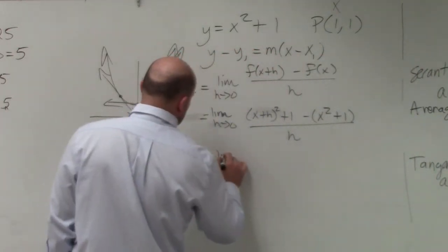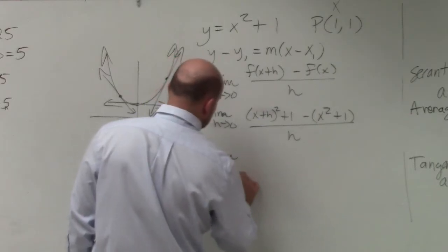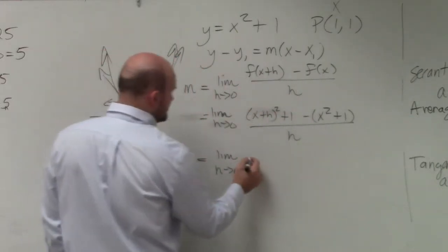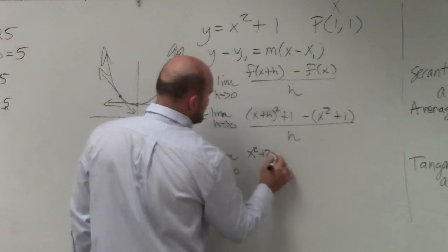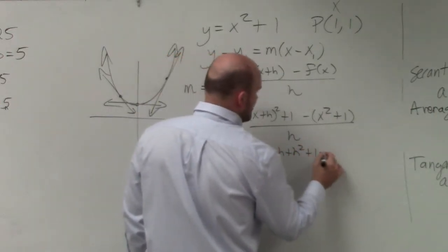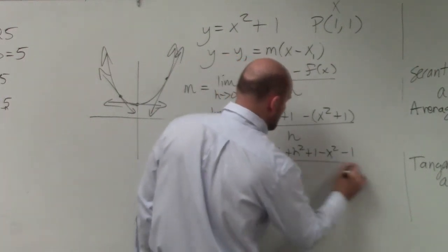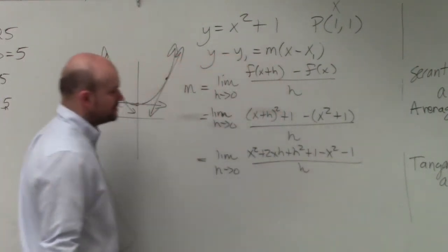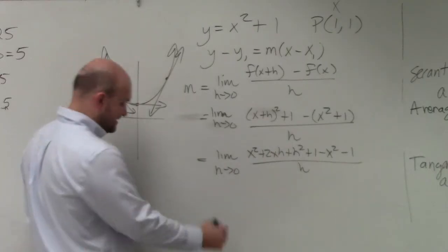OK, so now let's go ahead and simplify this. h approaches 0. So this is a binomial squared: x squared plus 2xh plus h squared plus 1 minus x squared minus 1 all over h. And now we see what simplifies out.